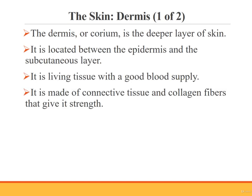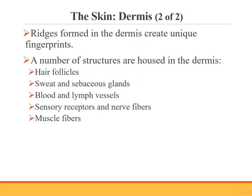The dermis is the deeper layer of the skin, located between the epidermis and the subcutaneous layer. It is also known as the corium, which means true skin. The dermis is living tissue with a good blood supply, made of connective tissue and collagen fibers. Collagen fibers are very strong fibrous proteins that act as flexible glue, giving the dermis its flexible strength. Ridges formed in the dermis of our fingertips give each person a unique set of fingerprints, which do not change during our lifetime — fingerprints are still visible on Egyptian mummies.